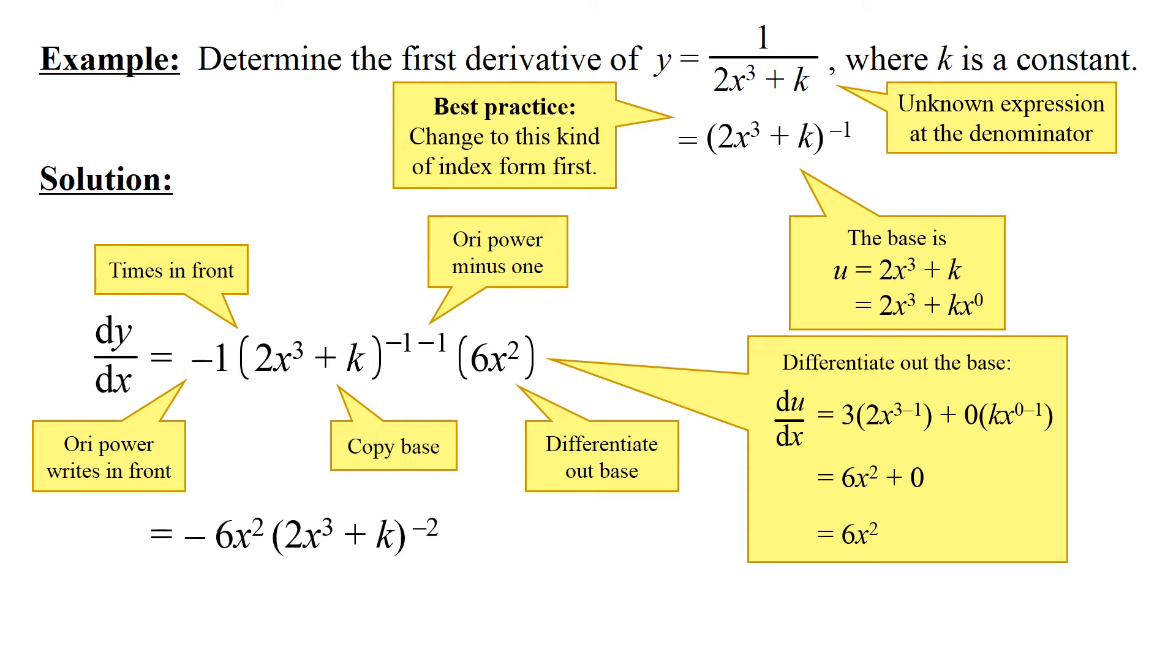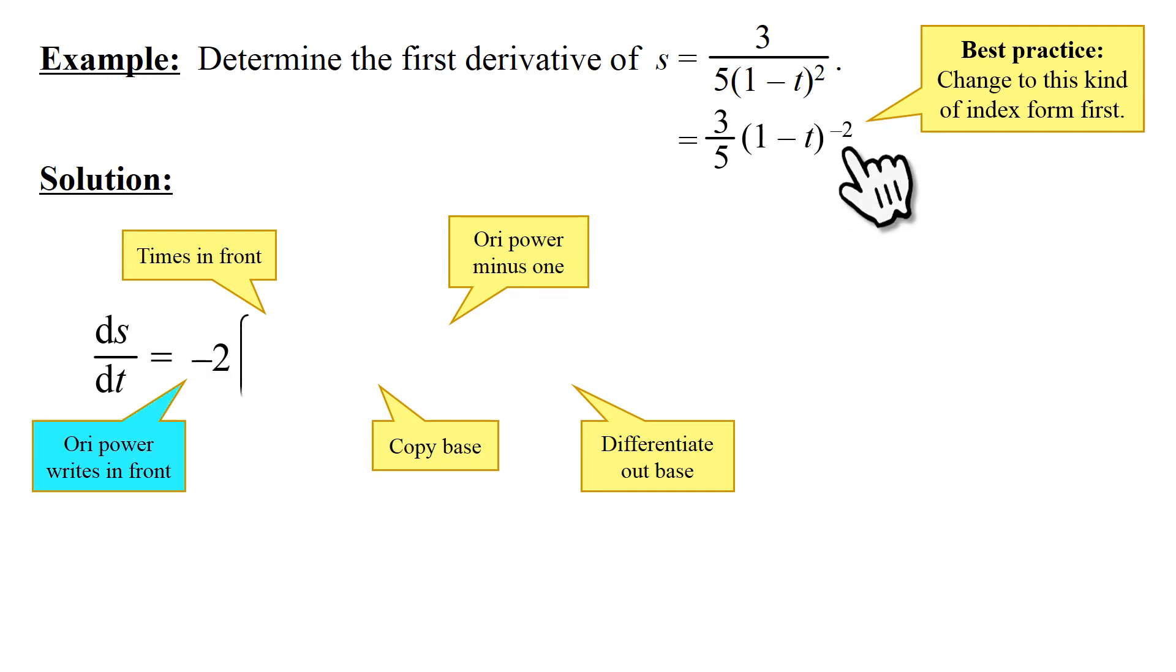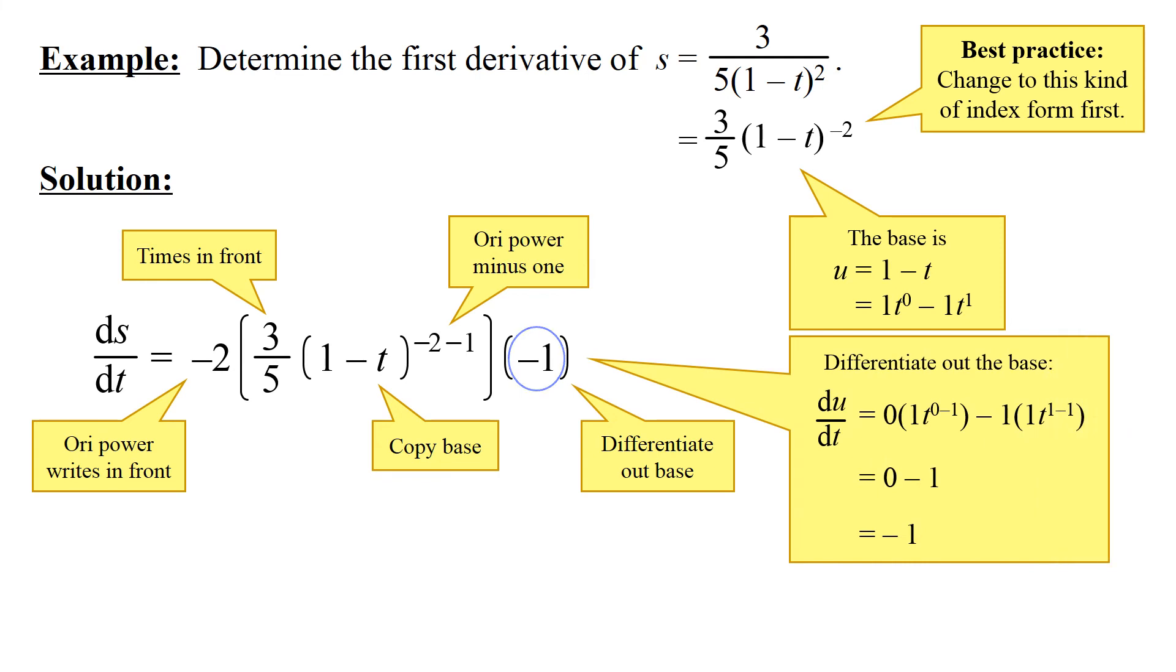We will look at a few more examples to reinforce the best practice, that is, to change to the index form first. Here we go. Ori power writes in front, times in front, copy base. Ori power minus one, differentiate out base. Since the base is 1 minus t, therefore, differentiating out the base with respect to t yields negative one.